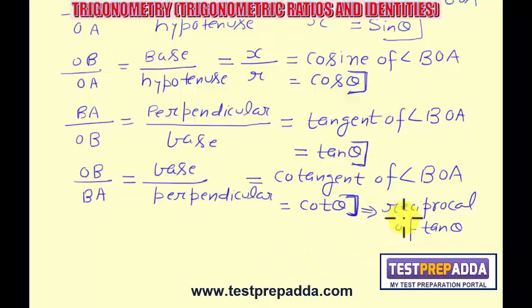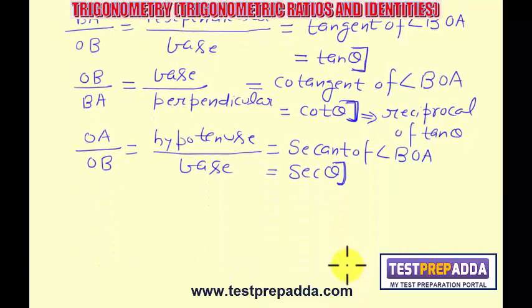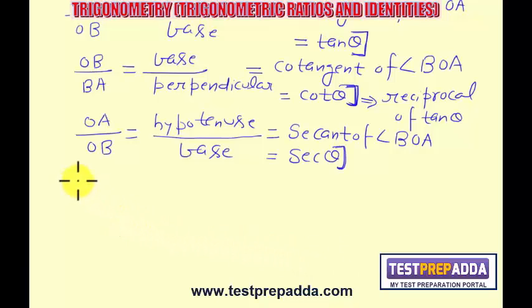As we did for tan theta, we can do for cos theta also. So if I write OA upon OB, that means hypotenuse upon base, what can we write this as? Reciprocal of cos theta. And this is defined as secant of angle BOA, which is written as sec theta. Sec theta, another trigonometric function.